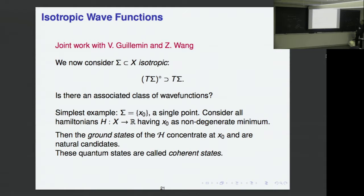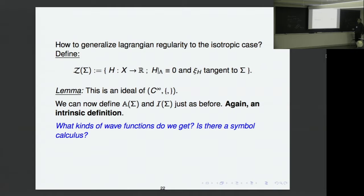There is a way to generalize the notion of Lagrangian regularity to the isotropic case. Now it is important to consider not only functions that vanish on σ but we must add the condition that the Hamiltonian vector field X_H is tangent to σ. In the Lagrangian case a function constant on Λ automatically has its Hamiltonian field tangent to Λ, but in the isotropic case the Hamiltonian field is only a section of the symplectic annihilator, which is bigger. Adding the tangency condition gives an ideal in C^∞ closed under the Poisson bracket, and we can define isotropic wave functions in the Hörmander way — it is an intrinsic definition.